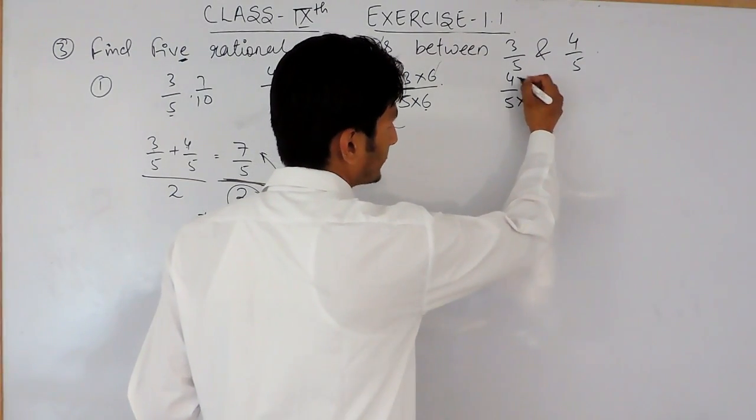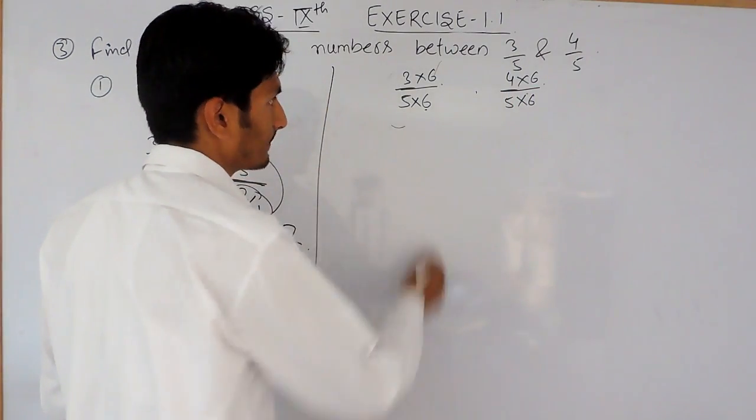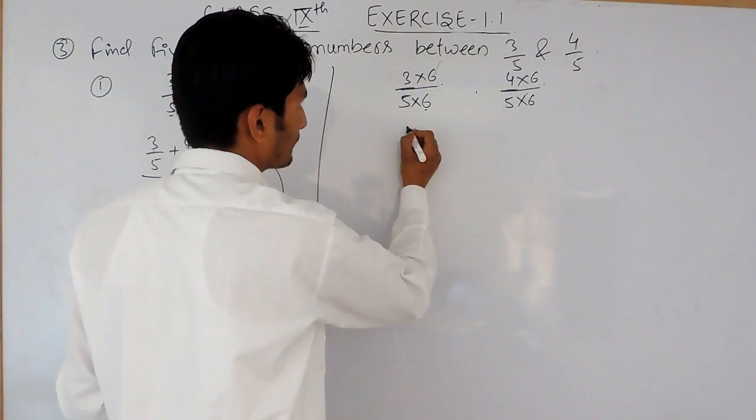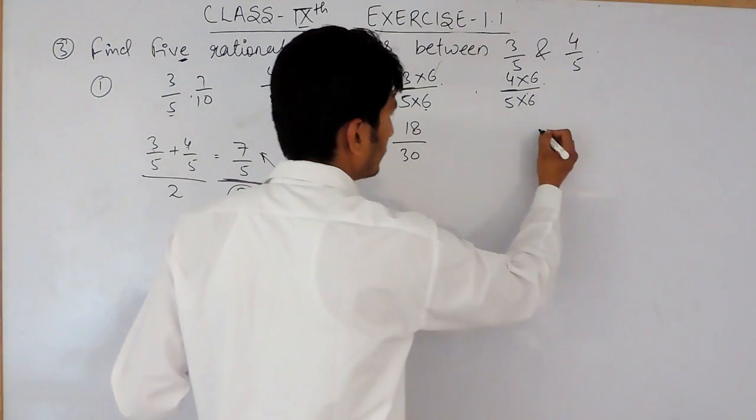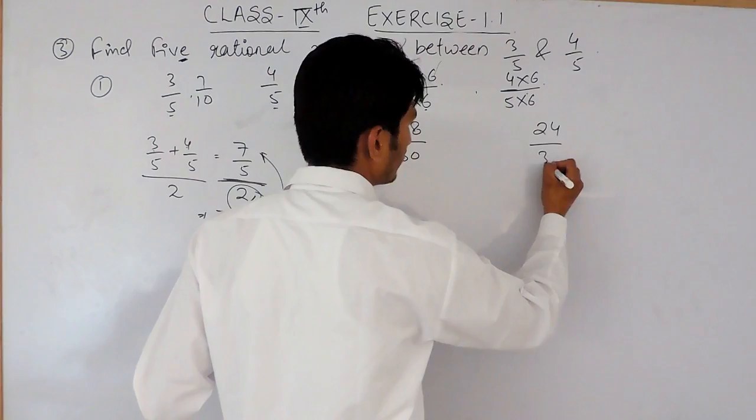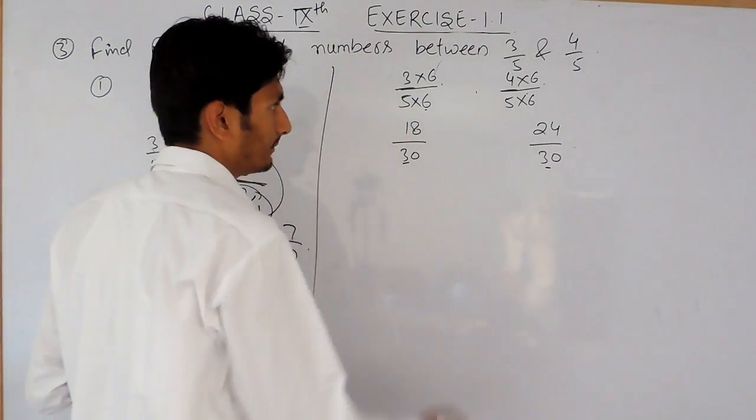Same thing you have to do here also. You have to multiply the denominator and the numerator with 6. So this will become 18 and this will become 30. This will become 24 and this will become 30.